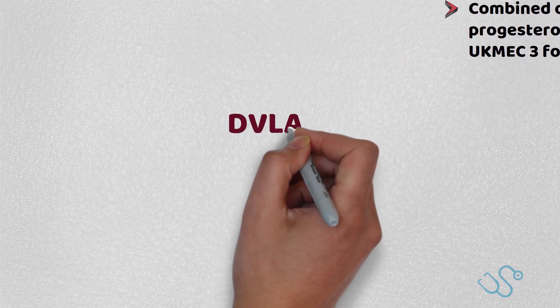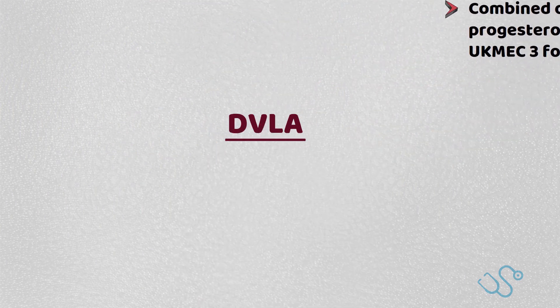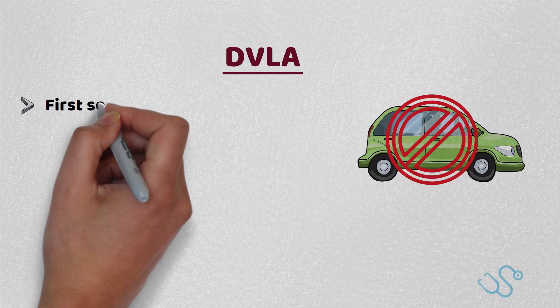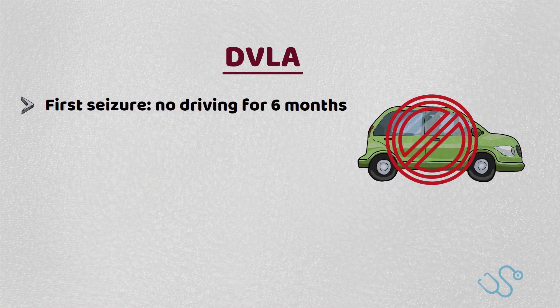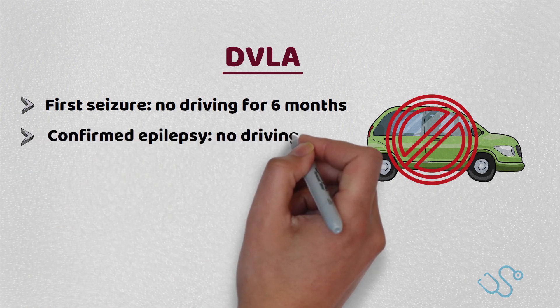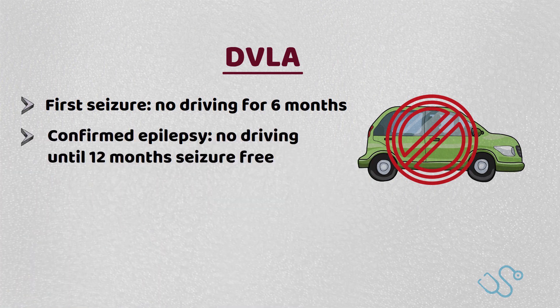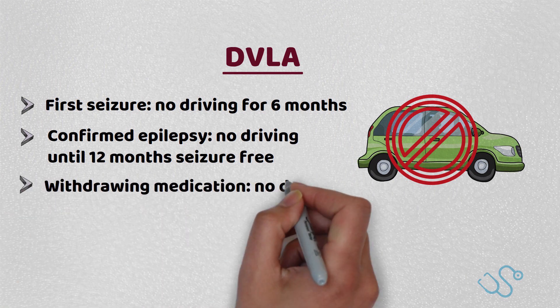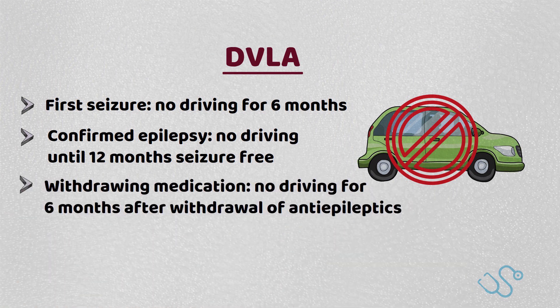When it comes to DVLA guidance, this is something that will crop up periodically in your career and is definitely an examiner's favourite. For a first seizure, no driving for 6 months. If you have confirmed epilepsy, you shouldn't drive for 12 months unless you're seizure-free. And if you are withdrawing medication, no driving for 6 months after the withdrawal of antiepileptics.